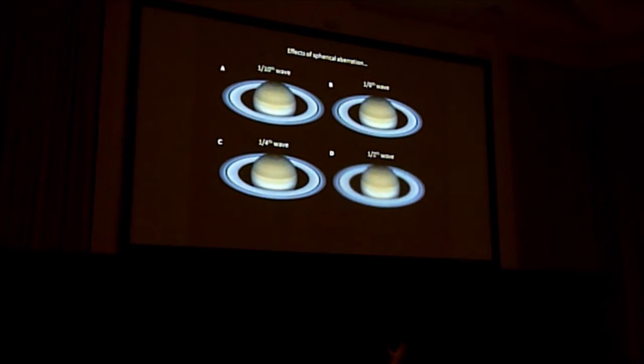You can see the images of Saturn showing the effects of spherical aberration, which is an optical aberration. This is something that often comes up. Is it really worth paying a big premium for high quality optics? Of course, if you want a telescope with really high quality optics, it will cost a great deal more than just average optics. But here you can see some images of Saturn showing the effects of spherical aberration, which is very common in telescopes.